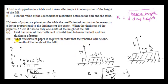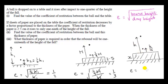In part three, we want to get the thickness of paper required so that the rebound will be one-sixteenth of the height of the fall. x is the unknown thickness of paper. We want the rebound height to be one-sixteenth of the drop height, so let's first calculate e: the square root of one-sixteenth, which is one quarter.